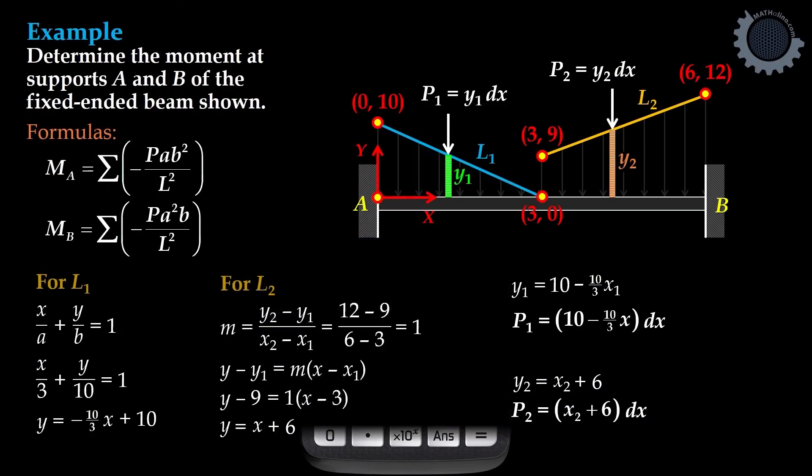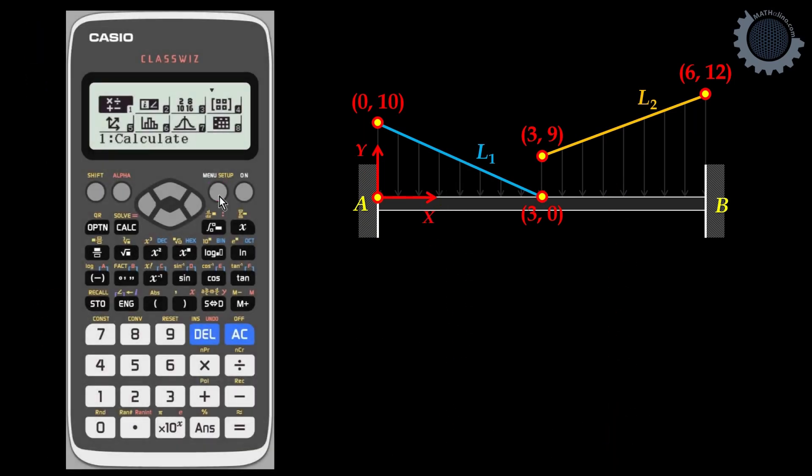We can also use the statistics mode of our calculator to determine the equation of the line. Menu, then navigate to number 6, statistics, and select linear, number 2.